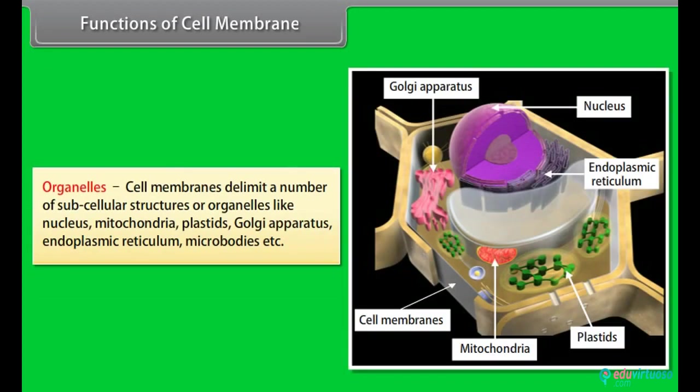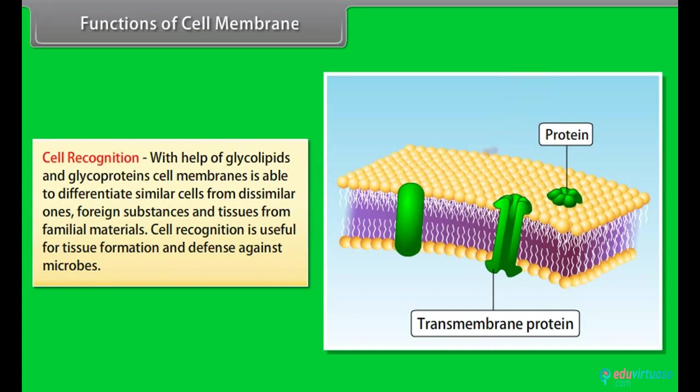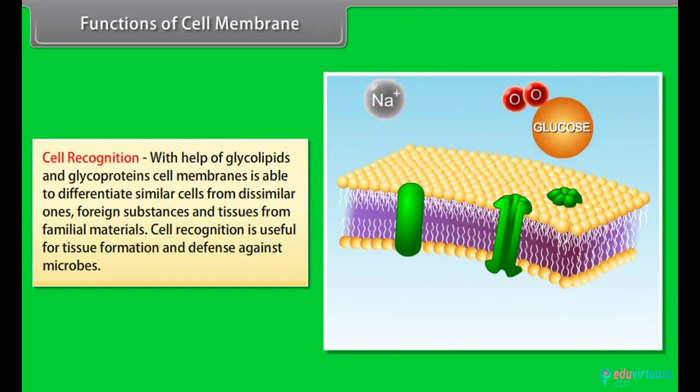Organelles - cell membranes delimit a number of subcellular structures or organelles like nucleus, mitochondria, plastids, Golgi apparatus, endoplasmic reticulum, microbodies, etc. Cell recognition - with the help of glycolipids and glycoproteins, cell membrane is able to differentiate similar cells from dissimilar ones, foreign substances and tissues from familial materials. Cell recognition is useful for tissue formation and defense against microbes.